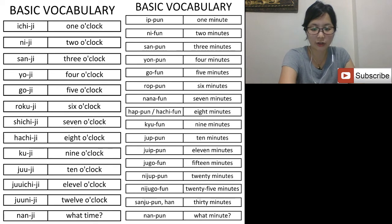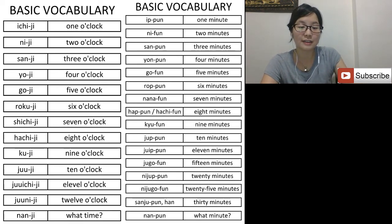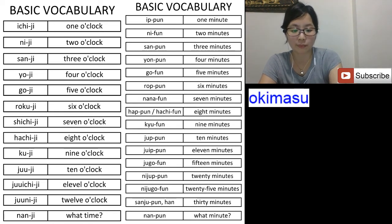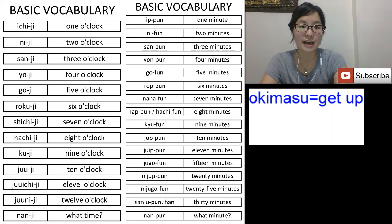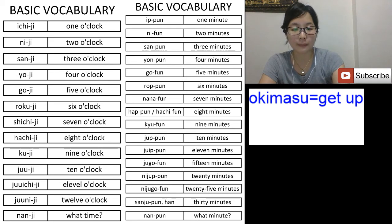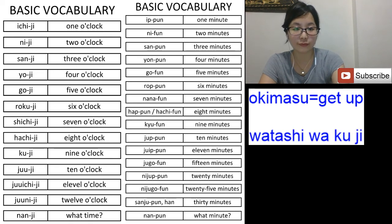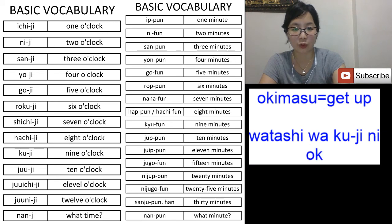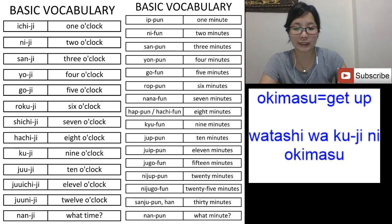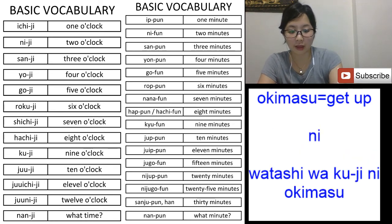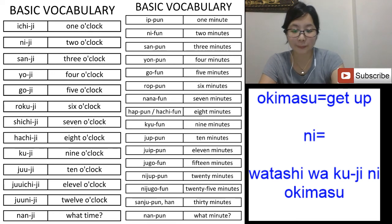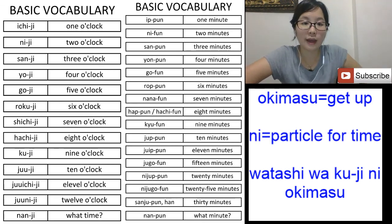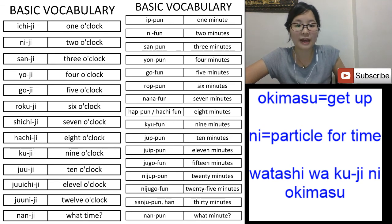Last time we learned about how to say 'get up' — 'okimasu'. Okimasu means to get up, and this form is present tense and future tense. If I say 'watashi wa ku-ji ni okimasu', the particle 'ni' comes together with a time expression — it is the particle for time. 'Watashi wa ku-ji ni okimasu' means 'I get up at 9 o'clock'.